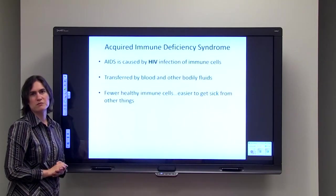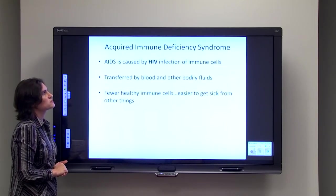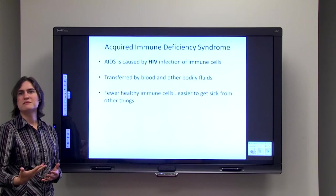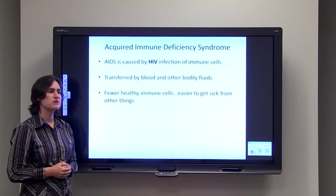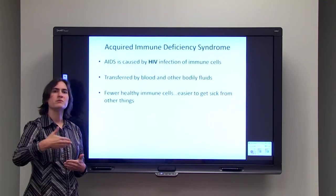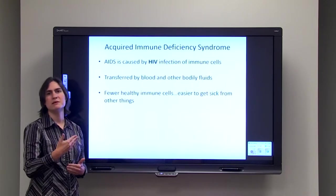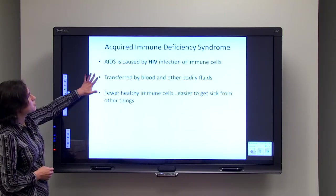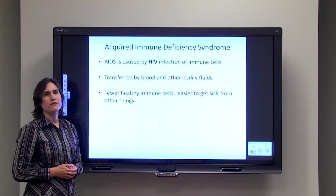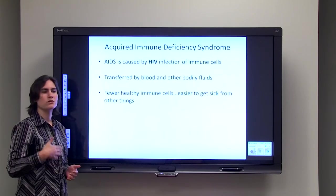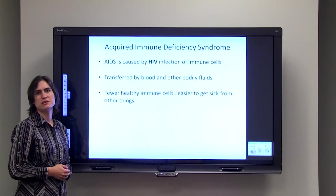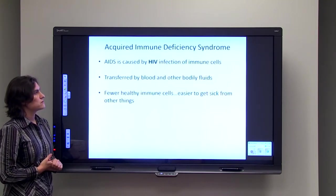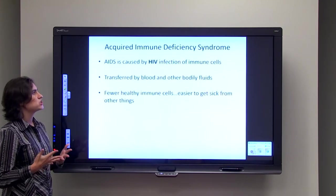This leads me to talking about acquired immune deficiency syndrome, which is short for AIDS. AIDS is caused by HIV infection of immune cells. When you infect these immune cells, then you can make them sick and start killing them off. Unfortunately, when that happens, you don't usually directly die from the AIDS virus, but you die from another infection that you get—maybe the common cold, maybe pneumonia, maybe something else. The AIDS virus can be transferred by blood and other bodily fluids, so it's very important for anyone going into the medical field to be careful when working with needles or other materials that could contain blood. Again, whenever you have fewer healthy immune cells because these are the ones getting infected by the HIV virus, it's much easier to get sick from other things.